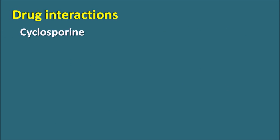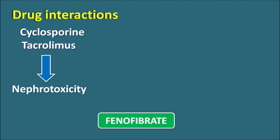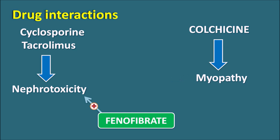Drug interactions: one important interaction is with immunosuppressants like cyclosporine and tacrolimus. These drugs produce nephrotoxicity, and since phenofibrate also reduces renal functionality, it can further increase the nephrotoxicity of these immunosuppressants. Another interaction is with colchicine, an anti-gout agent, which can produce muscle disorders like myopathy and rhabdomyolysis — effects that are further increased by phenofibrate. Colchicine and phenofibrate should therefore be avoided together.